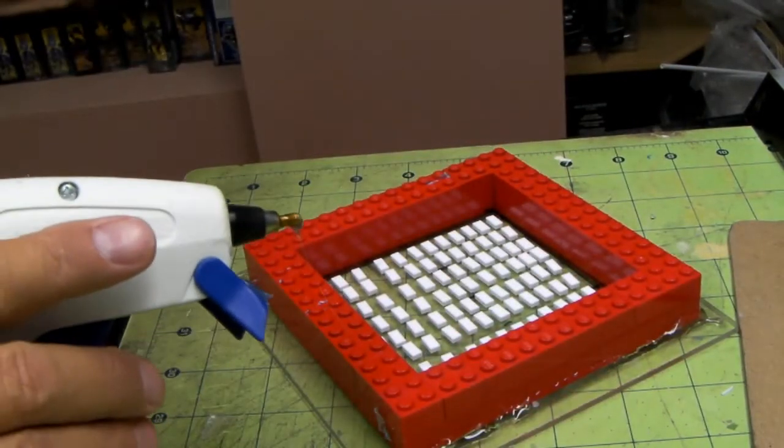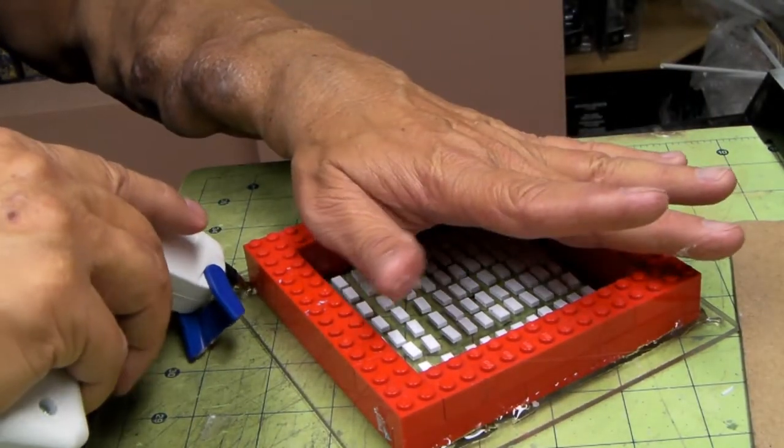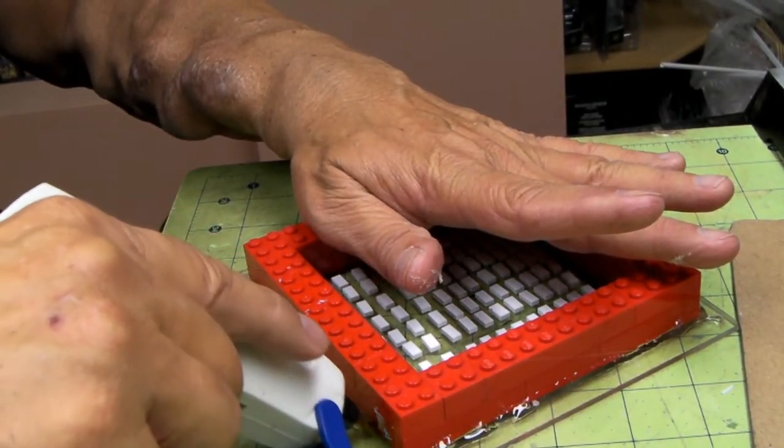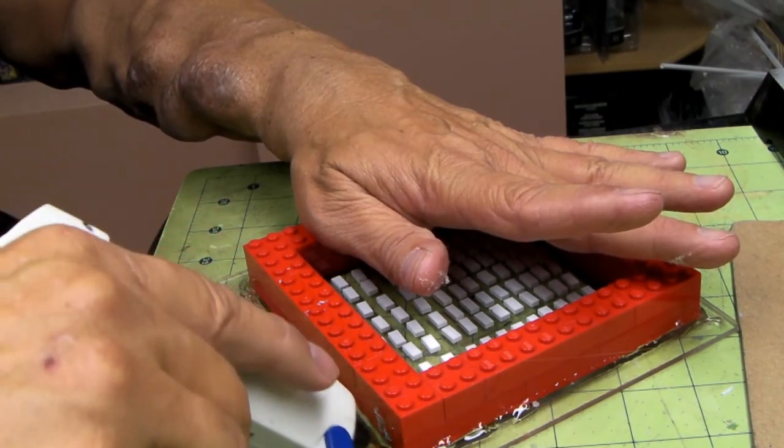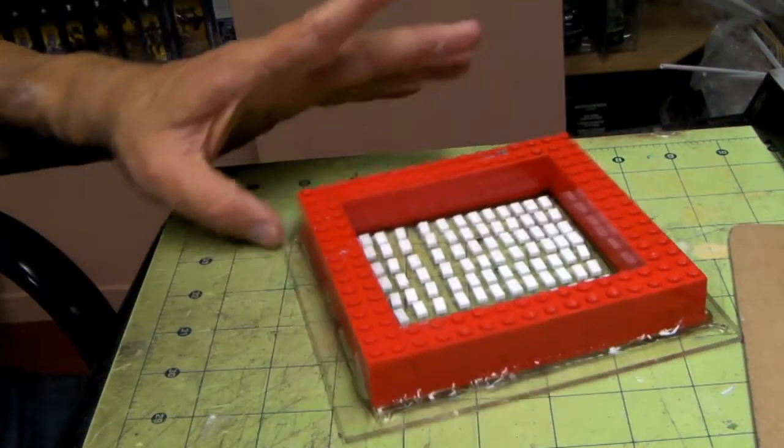And now yeah, try not to touch the glue. It's very, it's a molten bond. And that is it, we have a mold ready to go.